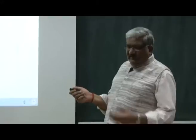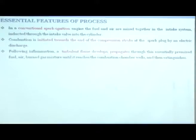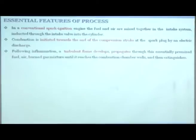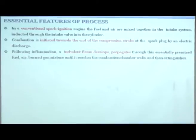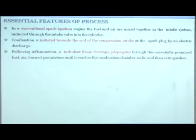Following inflammation — meaning the start of flames — a turbulent flame develops. Since the engine is moving all the time, with one cycle being about 15–20 milliseconds depending on engine speed, there are no laminar conditions; it is all turbulent. The turbulent flames develop and then propagate through the essentially premixed charge-burnt gas mixture until they reach the combustion chamber walls, where the flames extinguish.